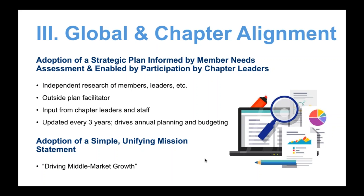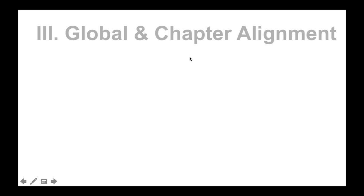Diane asked: does each chapter board get quarterly calls with Global or all on one call? They're all on one call because we have 59 chapters. John asked who hosts the quarterly calls — it's the CRP. Usually I don't participate unless they ask me to. Leslie and her team figure out the agenda and topics, and they recruit speakers. It's usually a chapter leader or chapter executive sharing what they did, what worked, what didn't work, and what they learned — and then we let people ask questions.